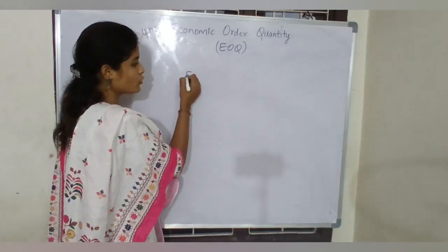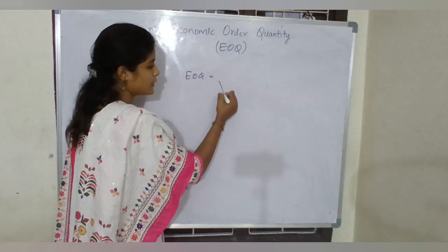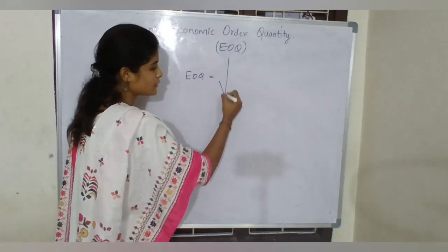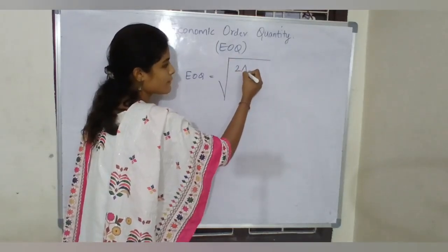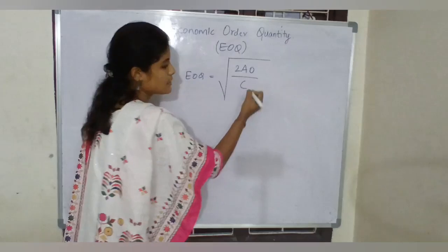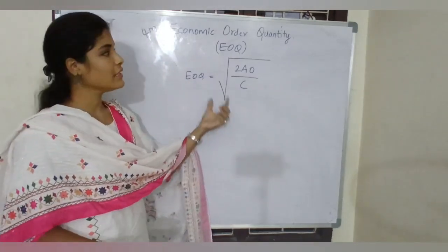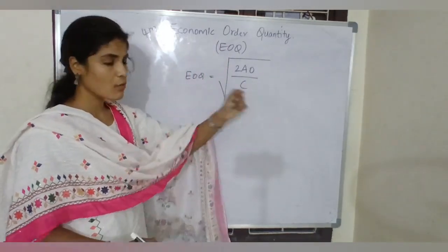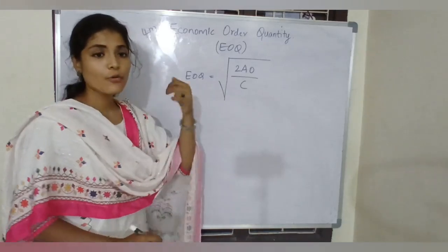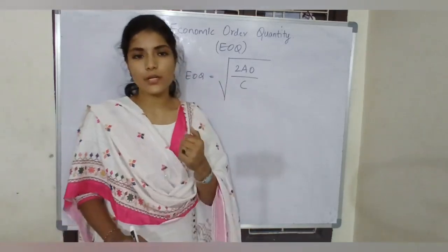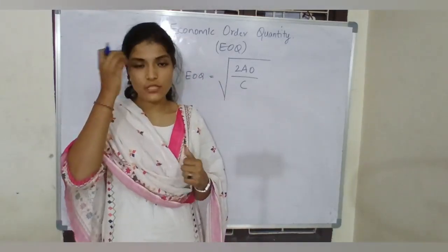What is the EOQ formula? EOQ is nothing but under root 2AO by C. This is the formula of EOQ, that is Economic Order Quantity. This is the formula and how you need to solve your EOQ I will discuss now.